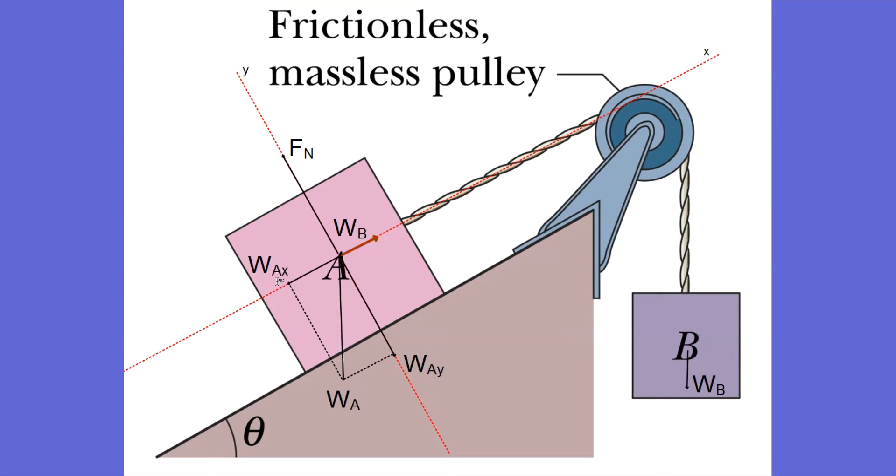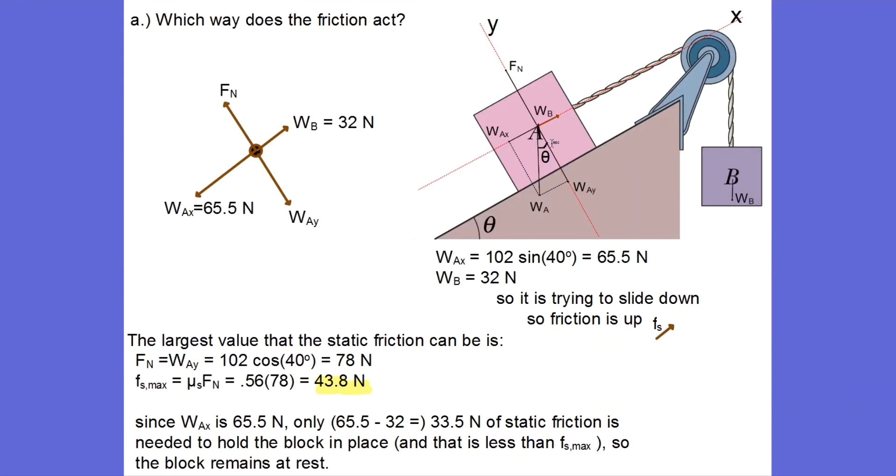Usually what we do is we use a dot that represents the center of mass of block A, and now we show all the forces acting on block A originating at its center of mass. The tension in the string from the weight of B is here and it's 32 newtons. My normal force is in the positive y direction, my y component of the weight of block A is in the negative y direction, and the x component of the weight of block A is in the negative x direction.